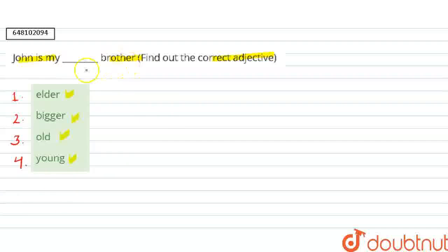So first we will know the meaning of the given sentence, John is my dash brother. So John mera bhai hai, itna toh pata chal gaya ki sentence kya represent kar raha hai. But here we have to find out the suitable adjective. So first I will tell you the meaning of adjective.